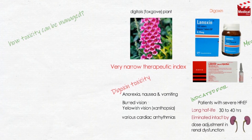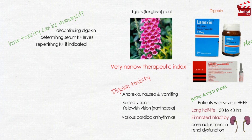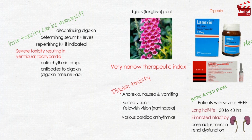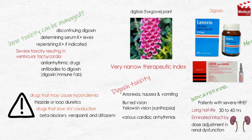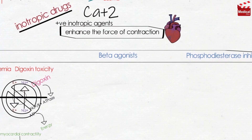Toxicity can often be managed by discontinuing digoxin, determining serum potassium levels, and replenishing potassium if indicated. Severe toxicity resulting in ventricular tachycardia may require administration of antiarrhythmic drugs and the use of antibodies to digoxin, digoxin immune Fab, which bind and inactivate the drug. Digoxin should also be used with caution with other drugs that may cause hypokalemia, such as thiazide or loop diuretics, and with drugs that slow AV conduction, such as beta-blockers, verapamil, and diltiazem.